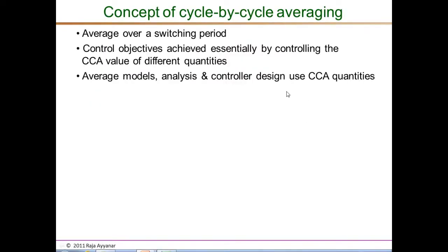We previously talked about averages of various quantities. The concept we use is the average over a complete switching period T_S, which we call the cycle-by-cycle average or CCA. CCA is important because all control objectives are achieved by controlling CCA values of voltages and currents, and it is used in both steady-state and transient average-based analysis.